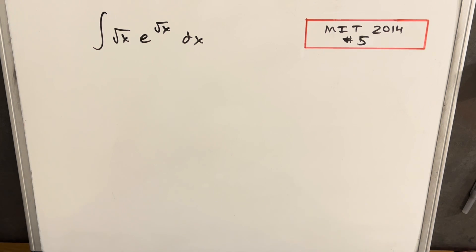Hey, we have another problem from the MIT Integration Bee 2014. This was problem number five. We have integral of square root of x e to the square root of x dx.